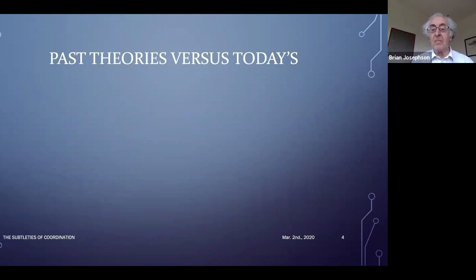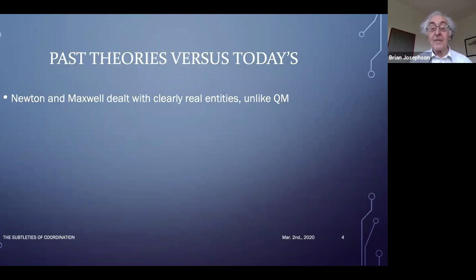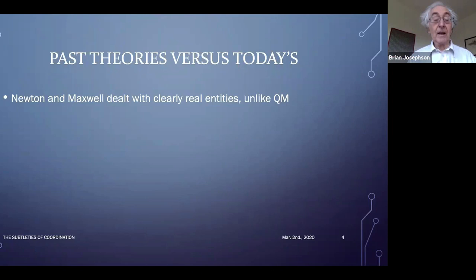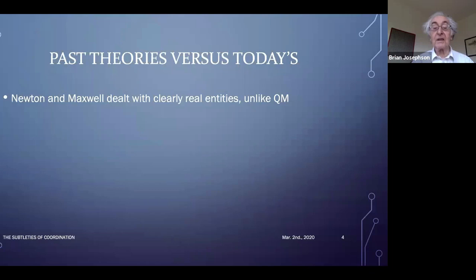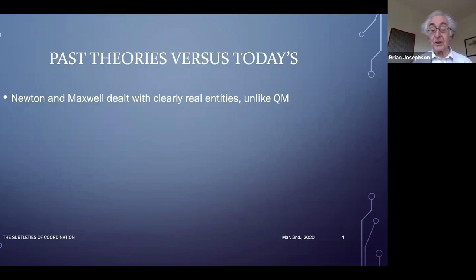I'm going to talk about why we need a new kind of theory of the universe and everything. I'll compare past theories — Newtonian mechanics and Maxwell's electromagnetism — with quantum mechanics, which is the standard explanation that took over more than a century ago. The first point is that these previous theories dealt with clearly real entities. Newtonian mechanics dealt with objects, acceleration, and forces; Maxwell dealt with electric and magnetic fields, which you can measure directly. But quantum mechanics is a lot more subtle, and people are not even sure how to interpret it.